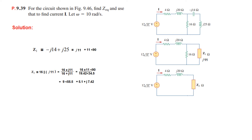Multiplying gives 16 times 11 at angle 90 in the numerator. Converting the denominator into polar form with a calculator gives 19.42 at angle 34.5 degrees.